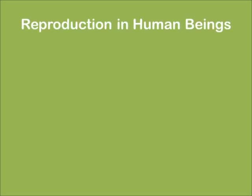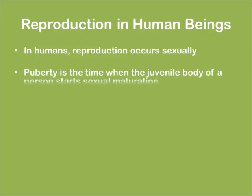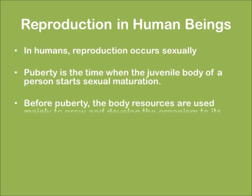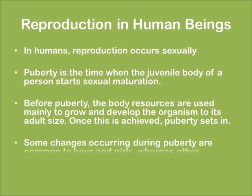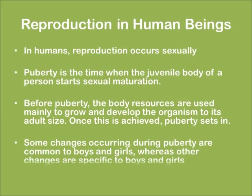Reproduction in human beings: in humans, reproduction occurs sexually. Puberty is the time when the juvenile body of a person starts sexual maturation. Before puberty, body resources are used mainly to grow and develop the organism to its adult size; once this is achieved, puberty sets in. Some changes during puberty are common to both boys and girls, whereas other changes are specific to each.